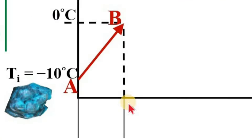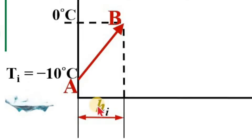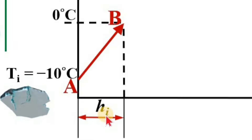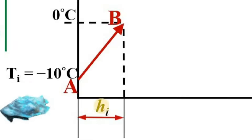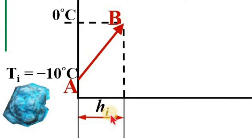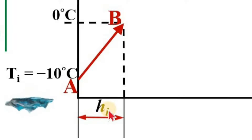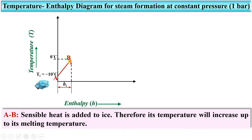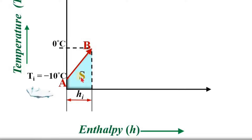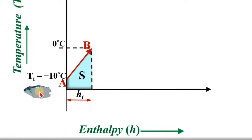This amount of heat is called Hi, the heat given to the ice. It is also called the sensible heat of ice, because during sensible heat addition the temperature rises only. This portion is called the solid phase because during the process A to B the phase is still ice.